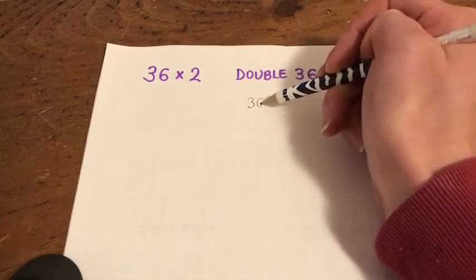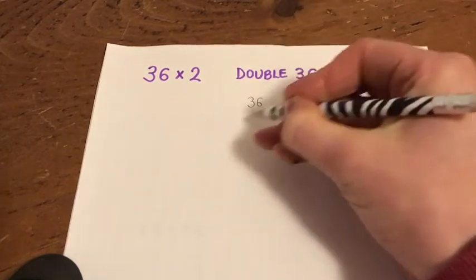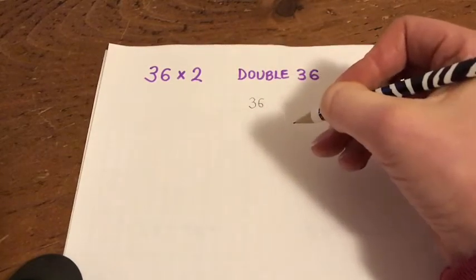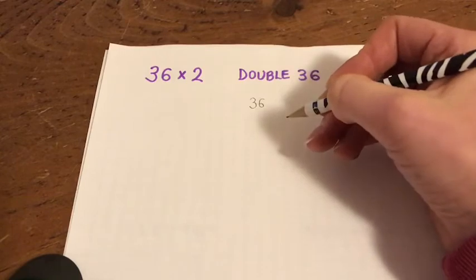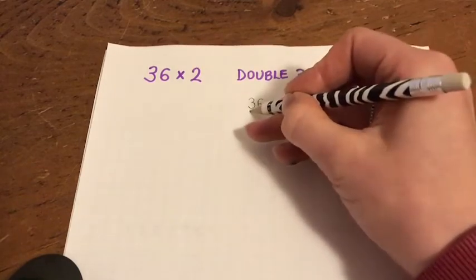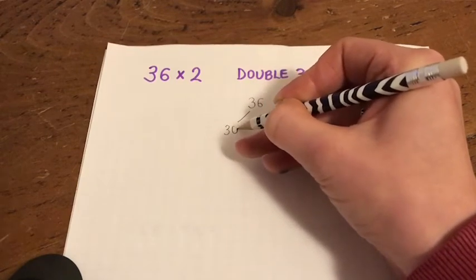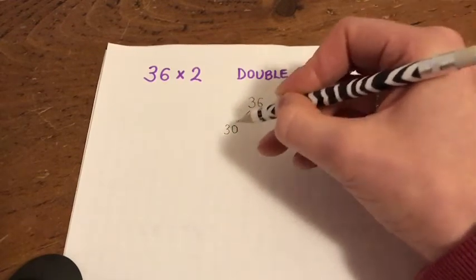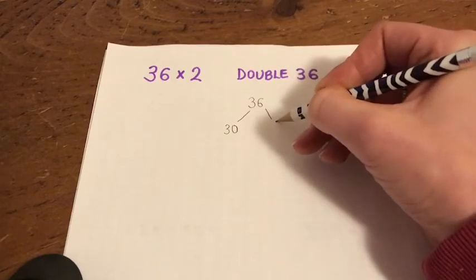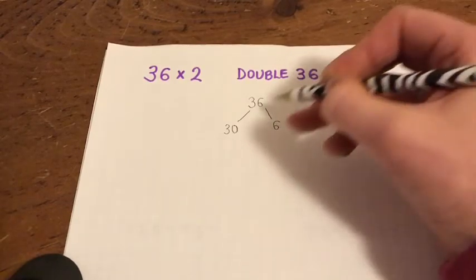Now, just like we do with the column method, we're going to partition the number. We're going to split it up into its tens and units. It's not just a 3, we must remember that it's a 30, because that's where you can get into a pickle. It's 30 and it's 6.